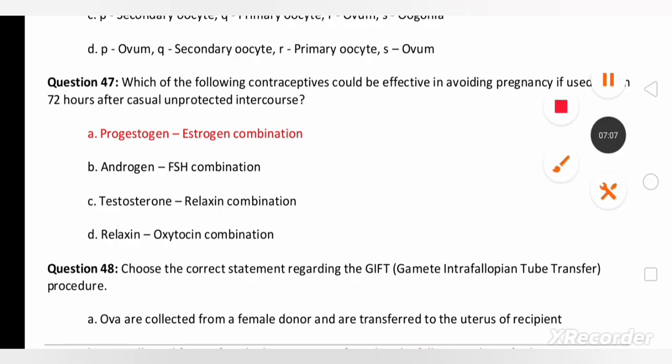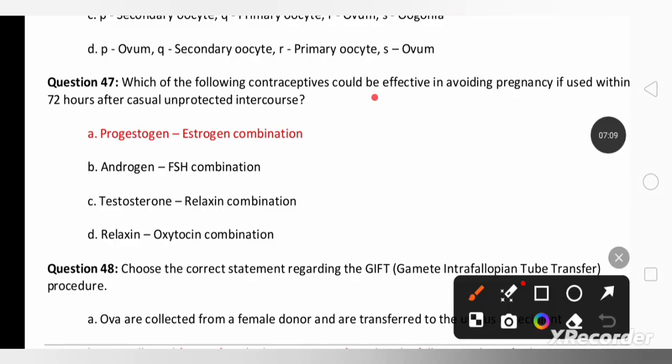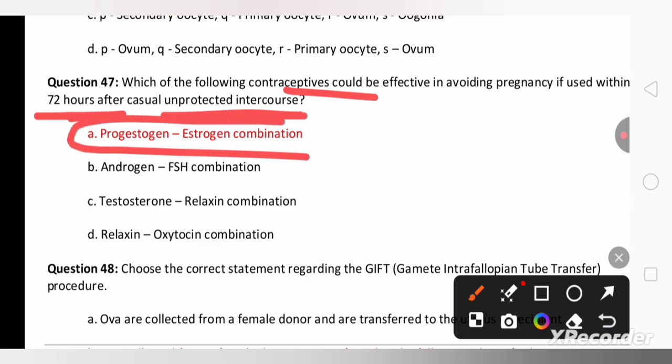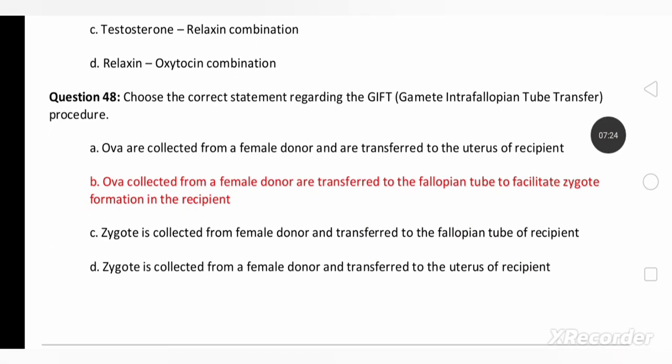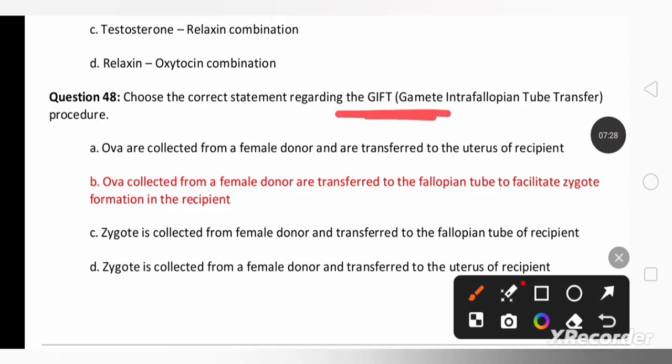In the next question which of the following contraceptive could be effective in avoiding pregnancy if used within 72 hours of unprotected intercourse? So definitely the combination of two hormones progestogen and estrogen combination pill has to be taken. Choose the correct statement regarding GIFT, gamete intrafallopian transfer. During gamete intrafallopian transfer, ova collected from the female donor are transported to the fallopian tube to facilitate zygote formation in the recipient.